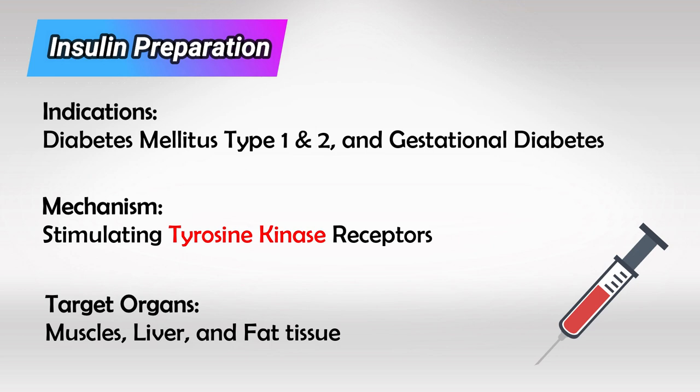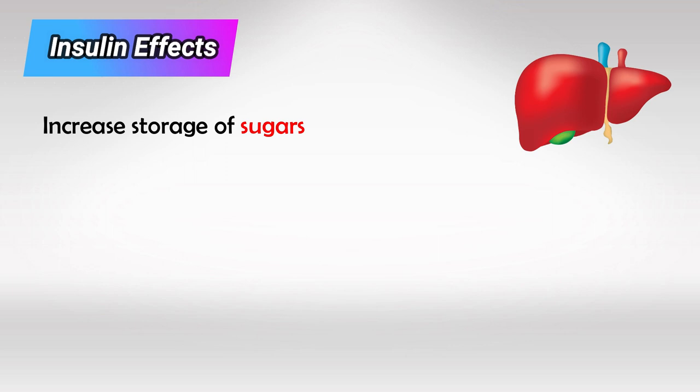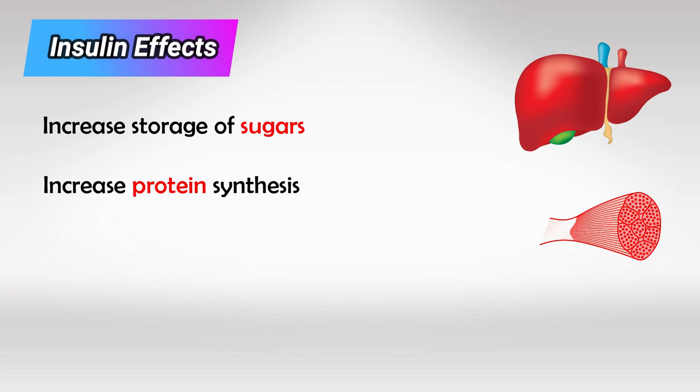Once the insulin receptor is triggered, the liver will store more glucose as glycogen, and the muscles will make more protein and increase the reuptake of potassium, and fat tissue will store more triglycerides.